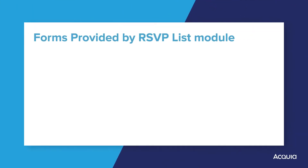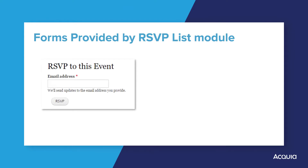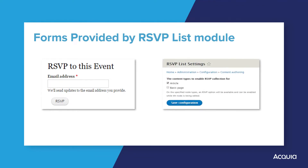There are two forms that the RSVPList module needs to handle. One form to collect the RSVP details of visitors, such as an email address, and the other form allows Drupal administrators to configure which content types have RSVPList functionality available.